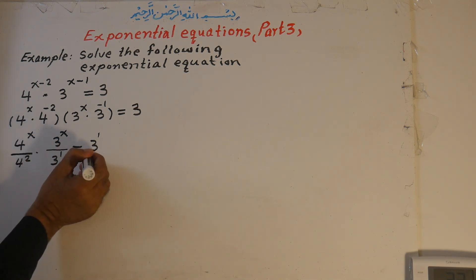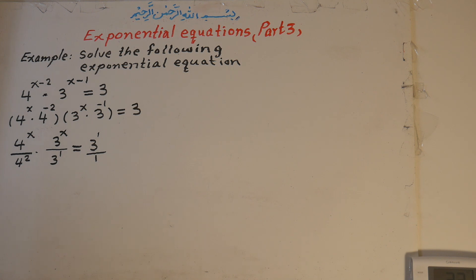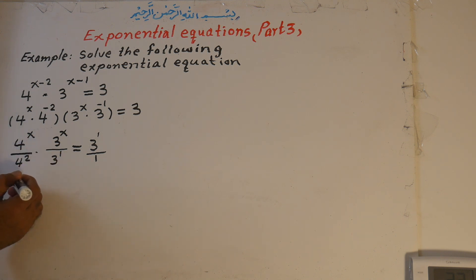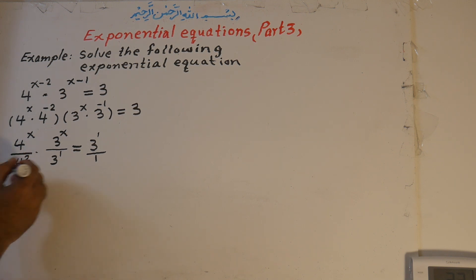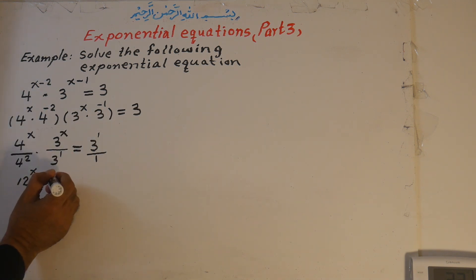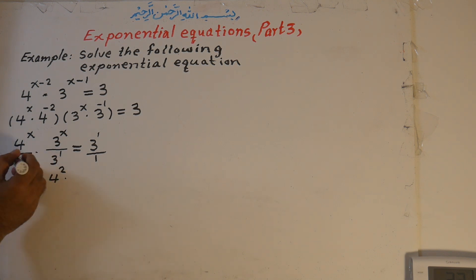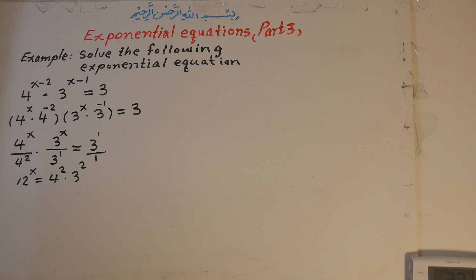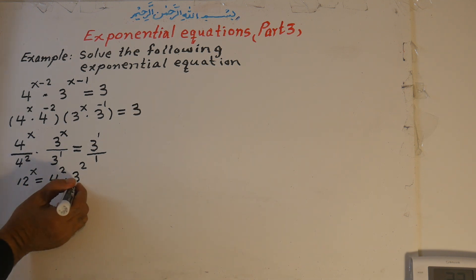Because this term has a negative exponent, we can write it in the denominator as a division: 4 to the power of positive 2. When a negative exponent moves from numerator to denominator, the sign changes from negative to positive. So we get 4 to the power of x over 4 to the power of 2, times 3 to the power of x over 3 to the power of 1, equal to 3 to the power of 1. Now we do cross-multiply. Because 4 to the power of x and 3 to the power of x both have the same exponent, we can multiply them together: 4 times 3 is 12, giving us 12 to the power of x. On the right side, 4 to the power of 2 times 3 to the power of 1 plus 1 gives 3 to the power of 2. In multiplication, we add the exponents.